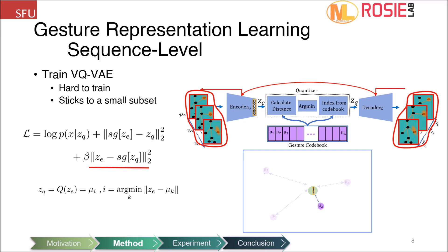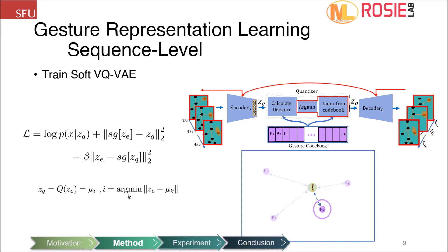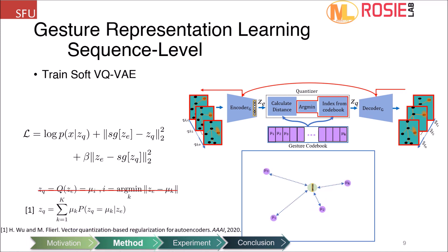However, training the VQVAE is challenging since only one token receives a gradient update and the model is prone to be stuck in a small subset of tokens. To address hard vector quantization issues, we use soft vector quantization, where the quantizer layer's output is a weighted combination of codebook tokens inversely proportional to the distance between encoder output ZE and codebook tokens. Therefore, each sample affects all tokens in the codebook. Note that soft vector quantization is only for training; at inference time we use the nearest neighbor or hard assignment.